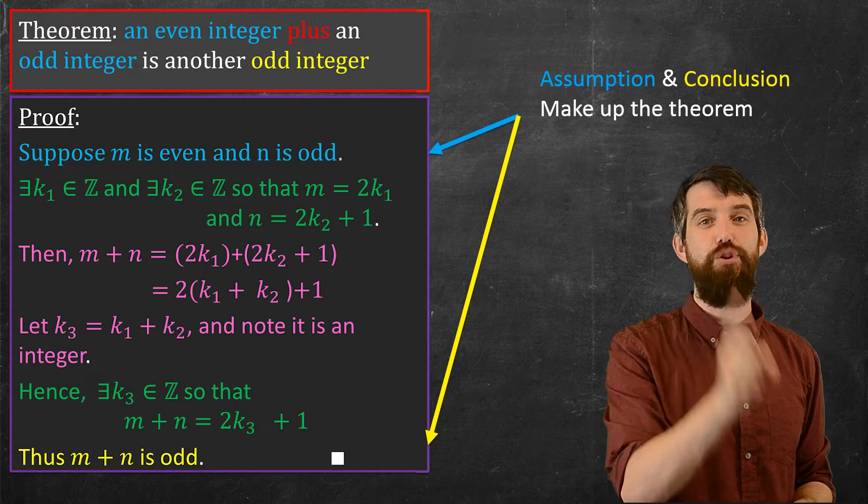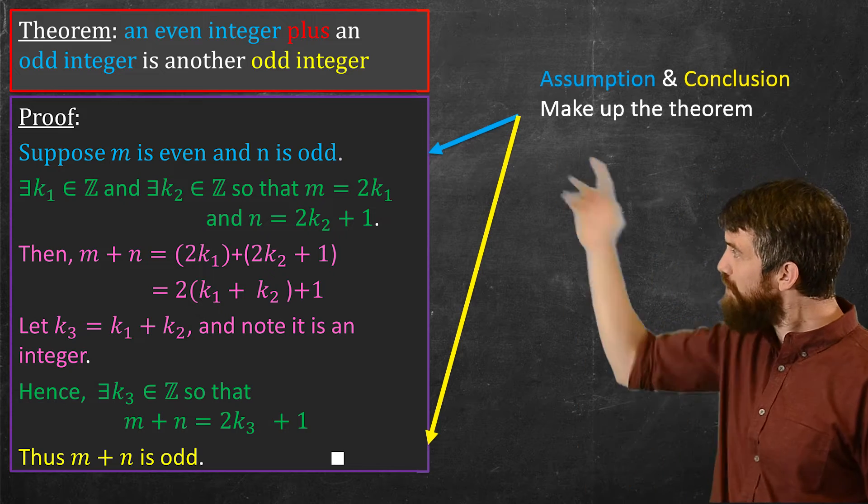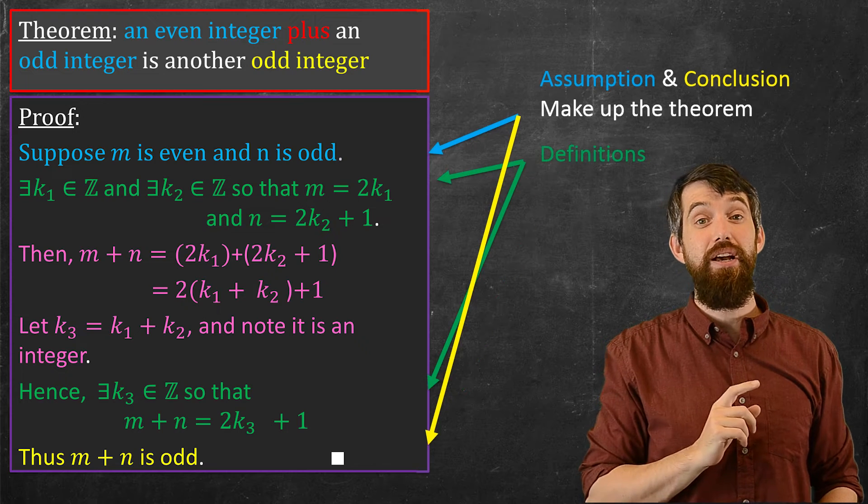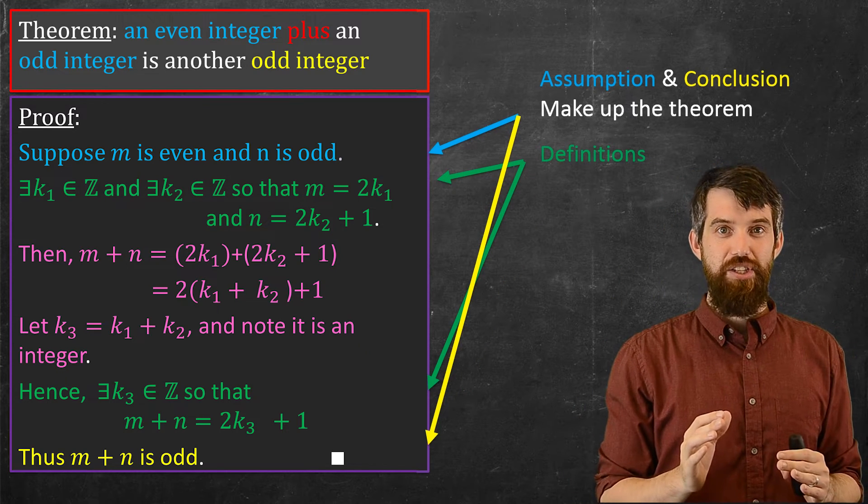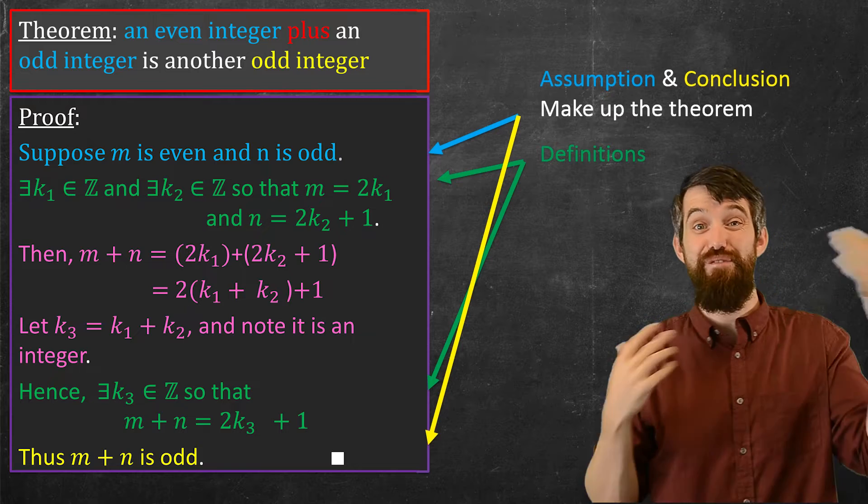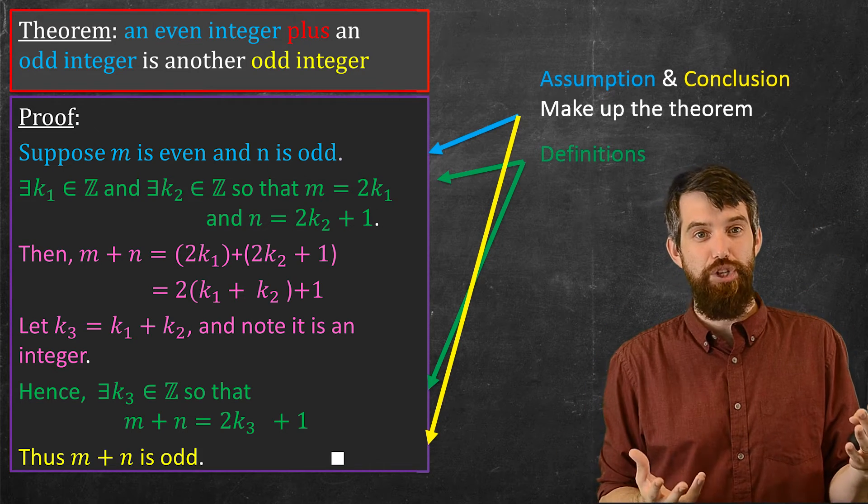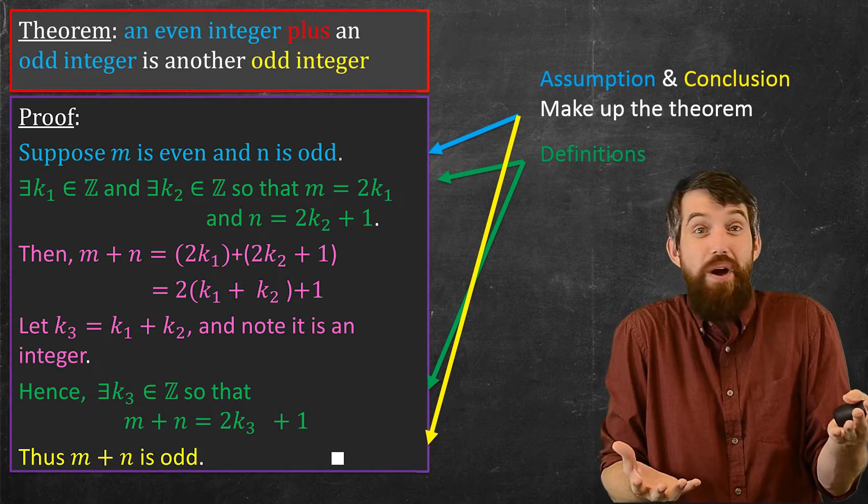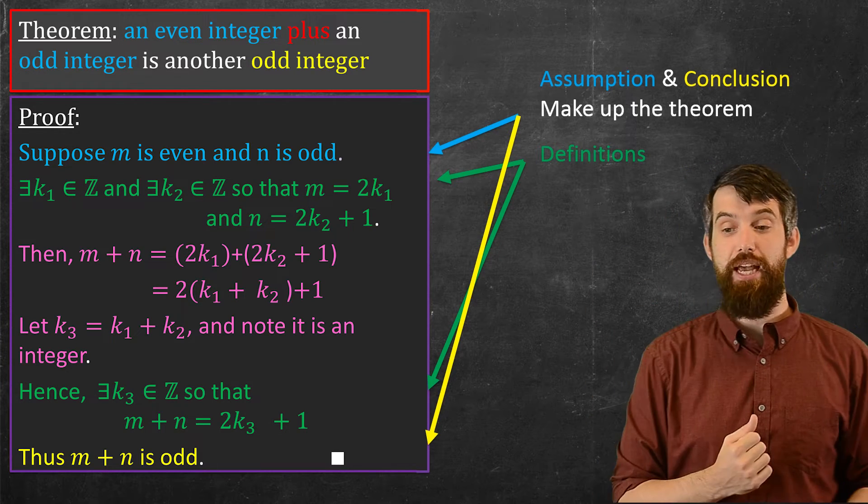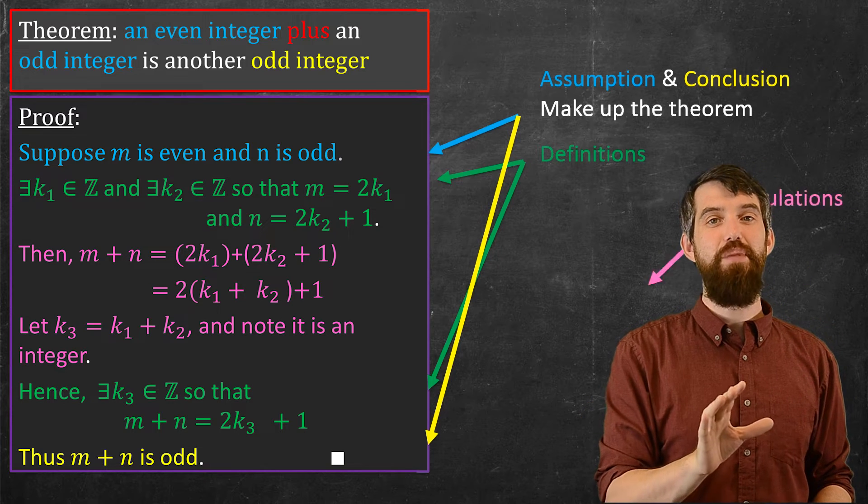But then I have the green stuff. And the green, the first green, is the definition of my assumptions. And the final one is the definition of my conclusion. So the assumption and the conclusion might be written a little bit vaguely. They might use some math terminology. But when I'm making an actual proof, I want to have those ideas expressed clearly with formal definitions. And so that's what the green is going to represent.